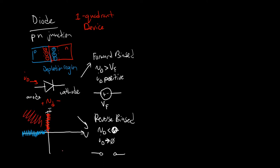Anytime you see an ideal switch in a switch mode power supply that needs to conduct positive current and block negative voltage, you can use a diode there. Diodes are uncontrolled — they just operate naturally. So if you need control for that switch, you couldn't use a diode. But if you don't need to control it, a diode would work. It's a one-quadrant device: conducts positive current and blocks negative voltage.